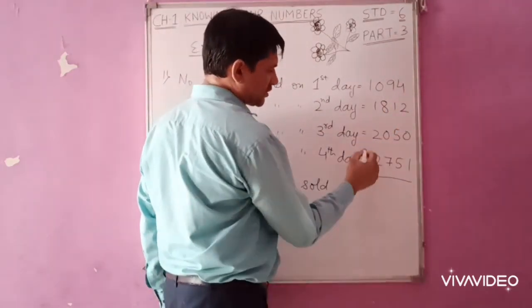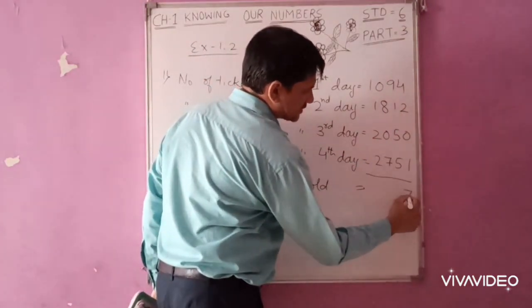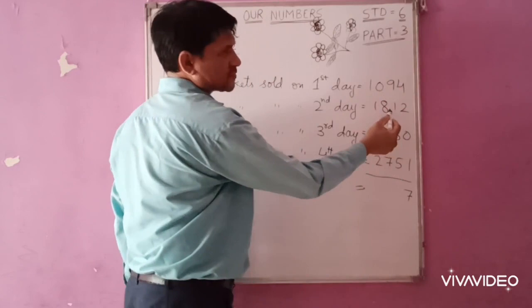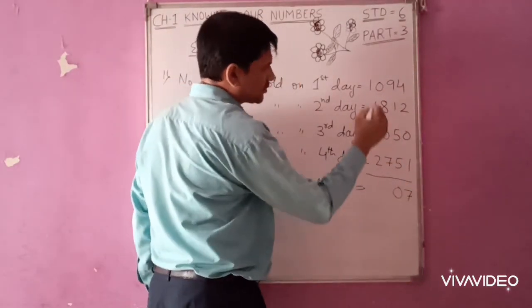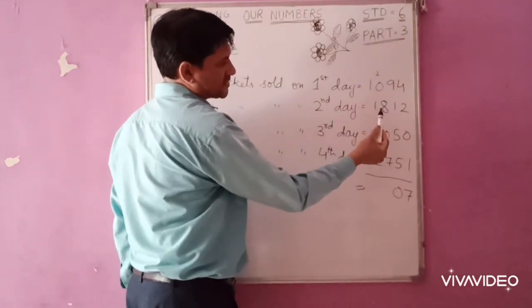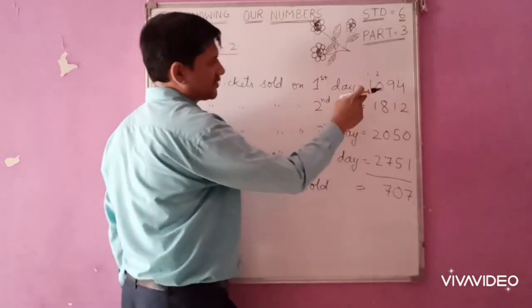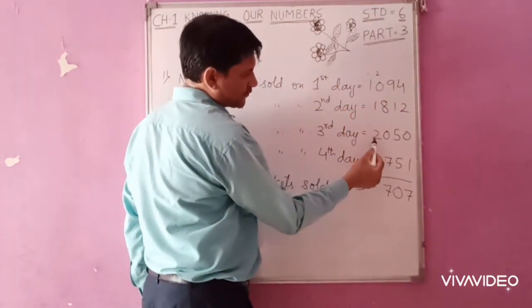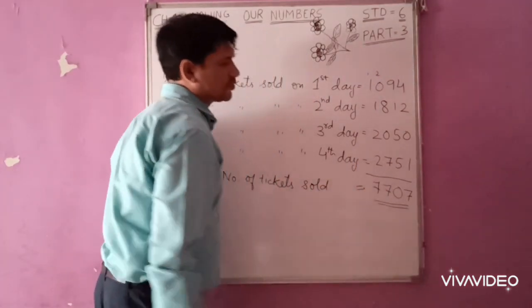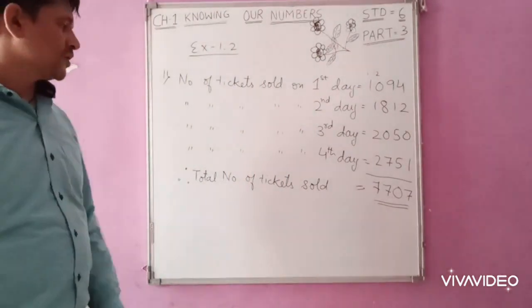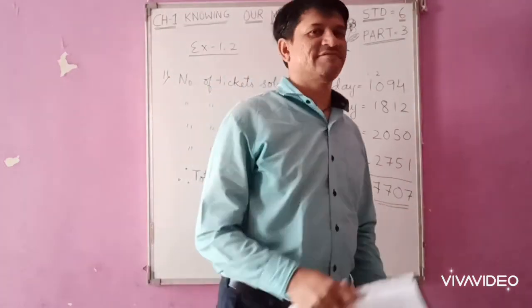So here we are going to add these numbers. 4 plus 2 plus 1, 7. 9 plus 1, 10, 10 plus 5, 15, 15 plus 5, 20, 0, 3, 10. 2 plus 8, 10, 10 plus 7, 17, 7, 1, 10. 1 plus 2, 2, 3, 4, 5, 6, 7. So the total number of tickets sold on 4 days is equal to 7,770.